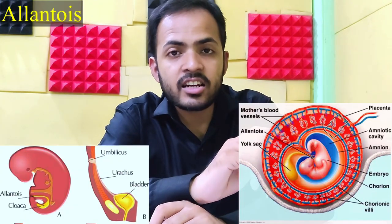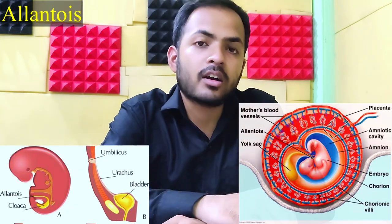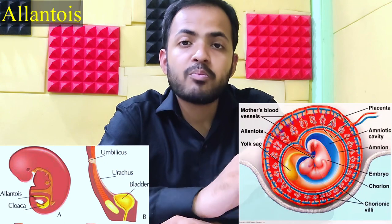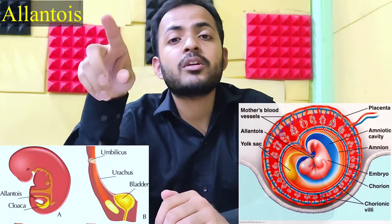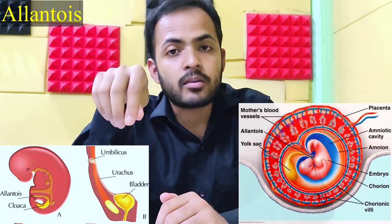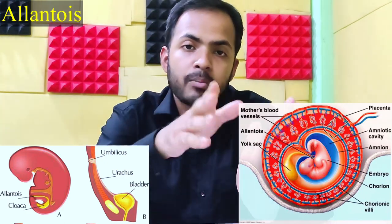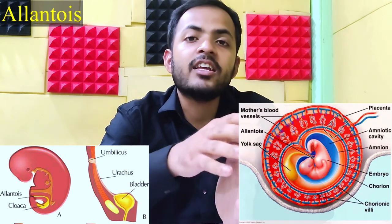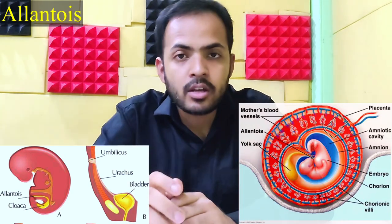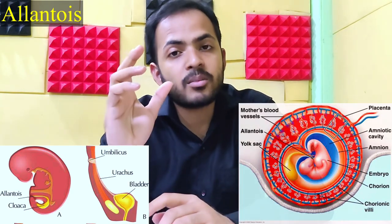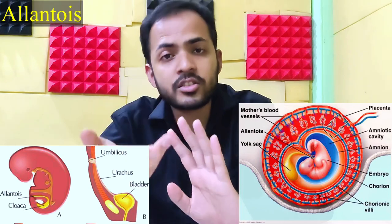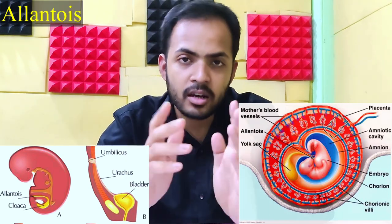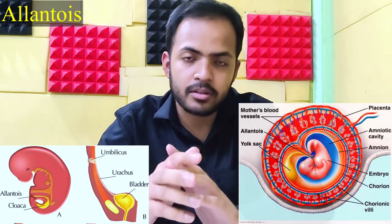The allantois is directly attached to the cloacal membrane and is partly absorbed by the primitive urinary bladder. The remaining part persists as the urachus, which later converts into the median umbilical ligament.